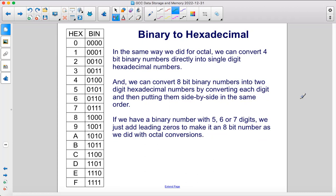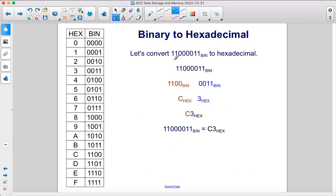In the same way we did for octal, we can convert 4-bit binary numbers directly into single-digit hexadecimal numbers. And we can convert 8-bit binary numbers into two-digit hexadecimal numbers by converting each digit and then putting them side by side in the same order. If we have a binary number with five, six, or seven digits, we just add leading zeros to make it an 8-bit number as we did with octal conversions. Let's convert this number to hexadecimal. First, we break it up into four-digit numbers. Then we use our table to convert this binary number into its hexadecimal equivalent. 1100 is C, 0011 becomes 3 in hexadecimal. Put them back together, and the answer is 3C in hexadecimal.